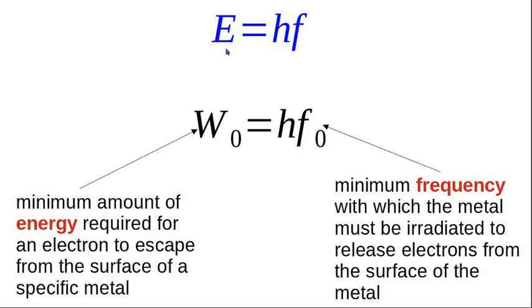If we have a look here from this energy equation E equals hf, here is my work function W0, which is the minimum amount of energy for the electron to escape. And it is equal to Planck's constant times the threshold frequency, here f0, which is the minimum frequency with which the metal must be irradiated to release the electrons. We've just taken E equals hf and been more specific that this is the work function and this is the threshold frequency.